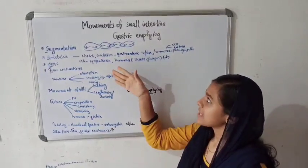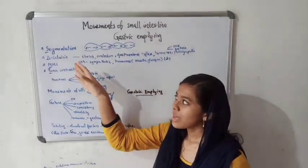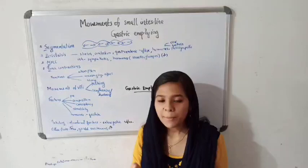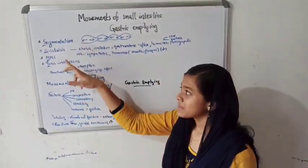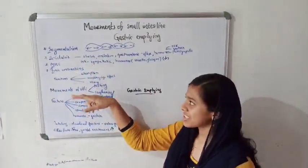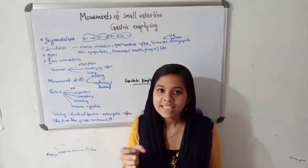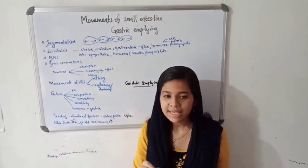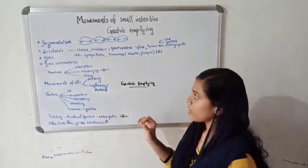Summary: four movements of small intestine — Segmentation, MMC, Tonic Contractions, Peristalsis. Segmentation occurs at regular interval sites with contracted rings, with the intestine segmented.